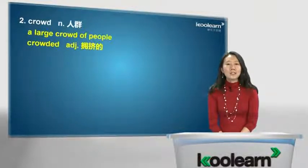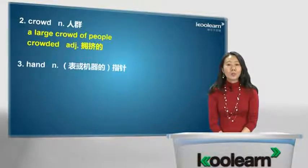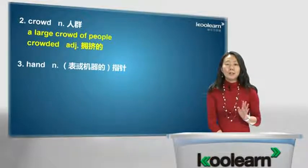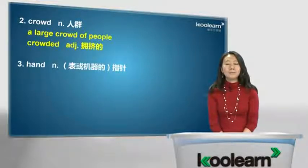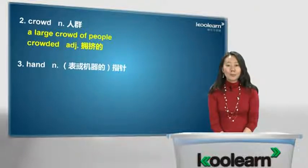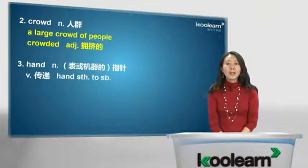下一个单词hand，大家应该非常熟悉，它可以作为名词表示手。人有手，但钟表、机器没有手，所以我们对应地把它叫做指针。既然它可以作为名词表示手，对应地hand就可以作为动词表示用手传递。如果想说把某个东西递给某人，就可以说成hand something to somebody。